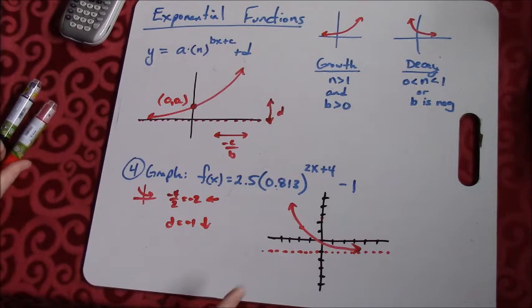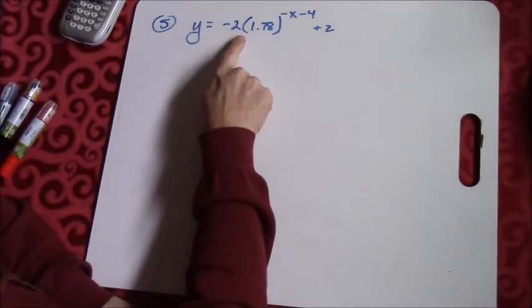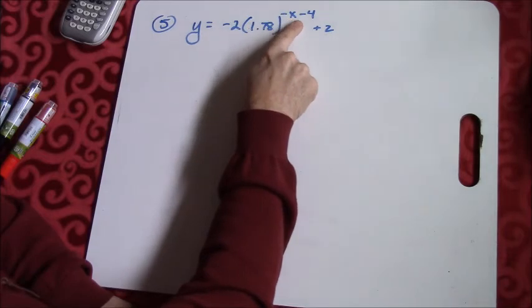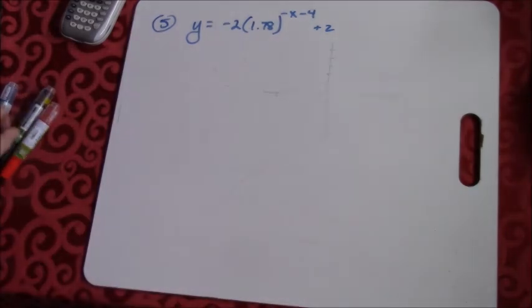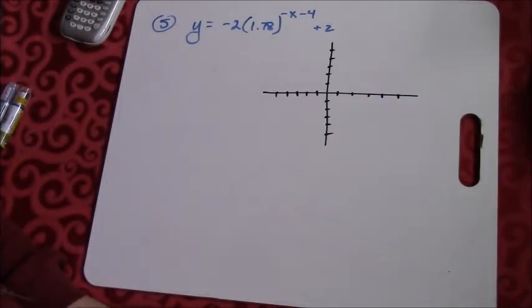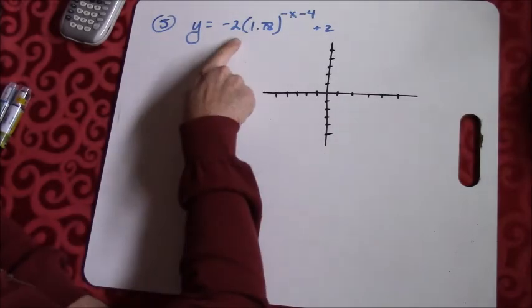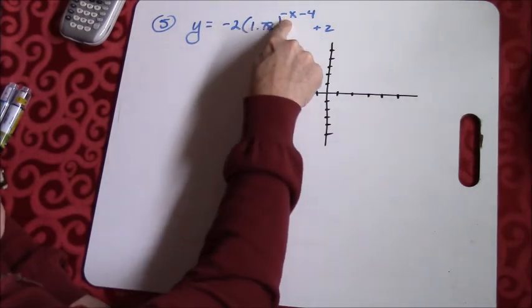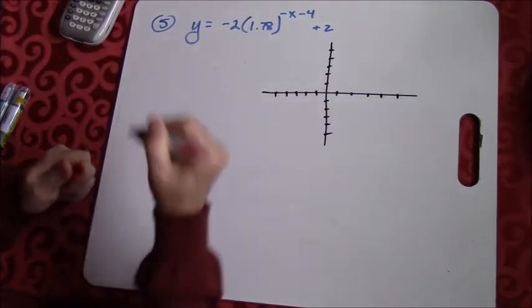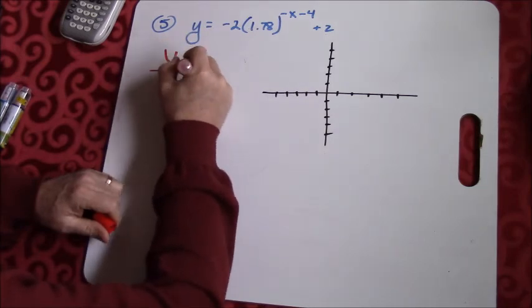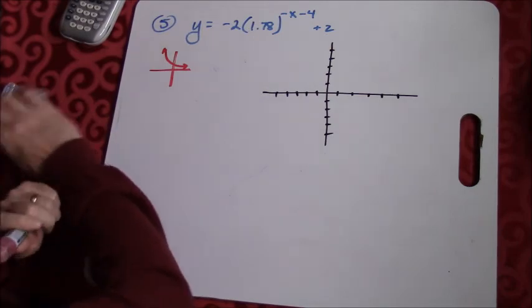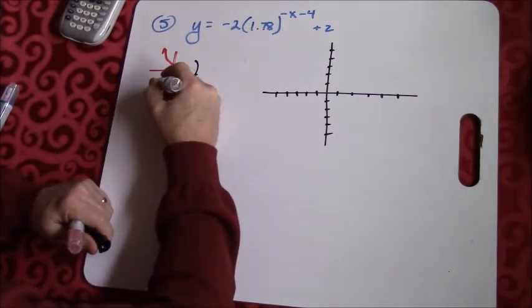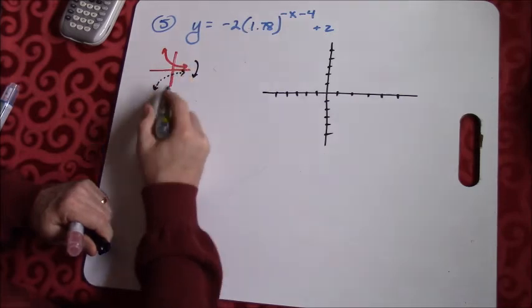Let's try one more. So this time let's graph this function. I've got y equals negative 2 times 1.78 raised to the negative x minus 4 plus 2. We want to draw a sketch of what we think that graph looks like.